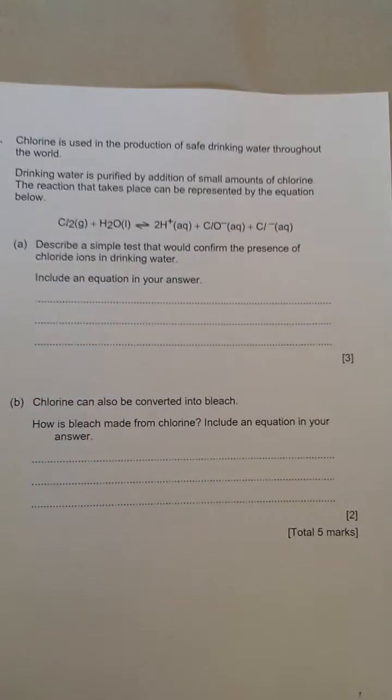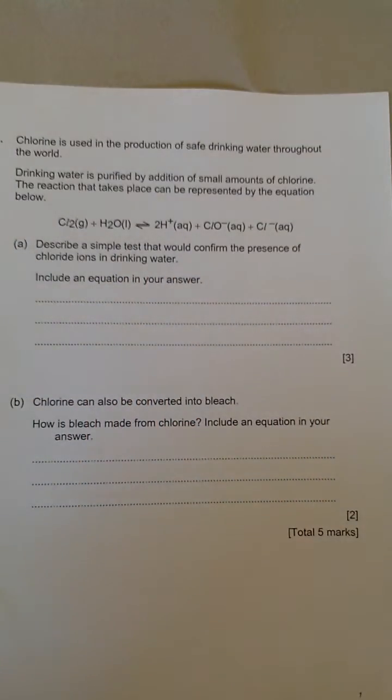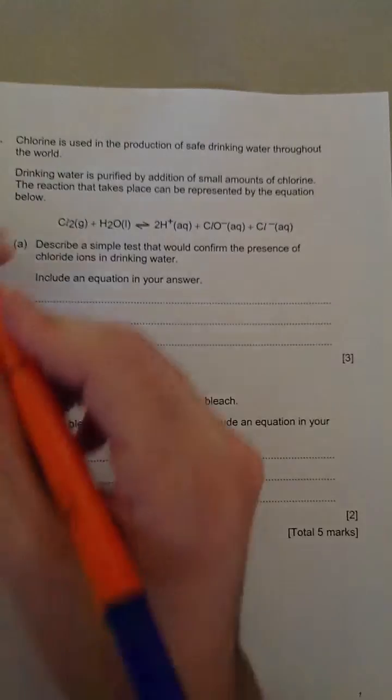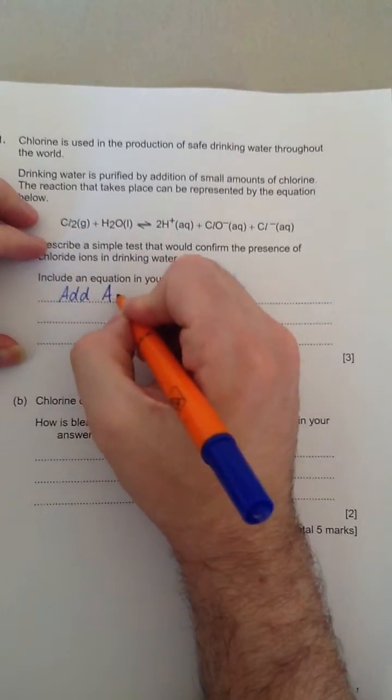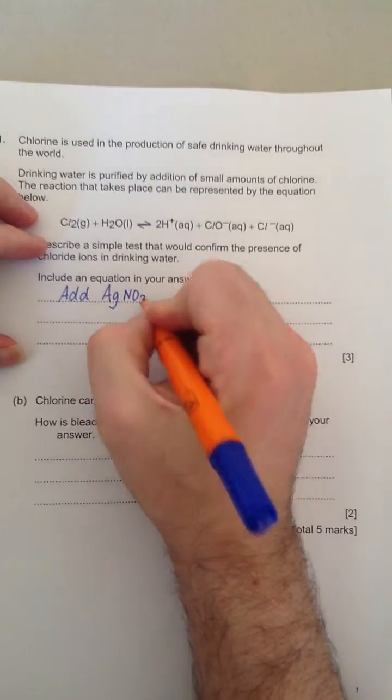Include an equation in your answer. So whenever you're asked to test whether there's chloride or bromide or iodide, any of the halide ions, the way you test them is you add silver nitrate solution. So silver nitrate is AgNO3, aqueous.